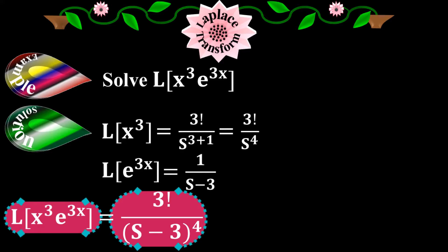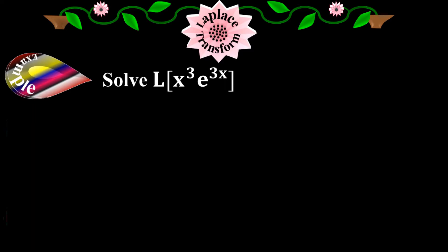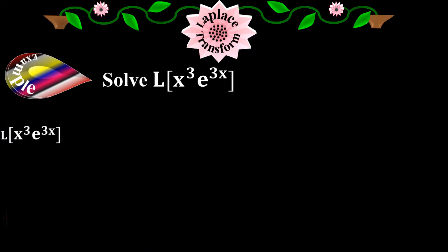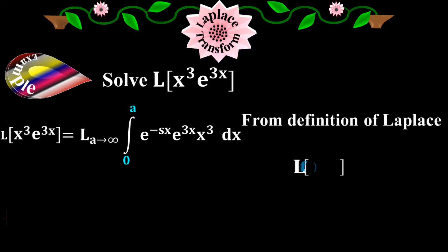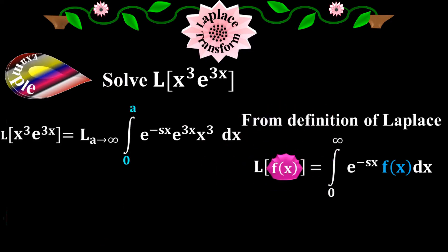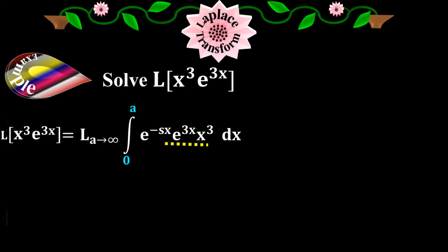Now I'm going to prove that the left side equals the right side. The Laplace of x to the 3 times e to the 3x equals the integral from 0 to infinity of e to the minus sx times e to the 3x times x to the 3 dx. I applied the basic Laplace transform formula: Laplace of f(x) equals the integral of e to the minus sx times f(x) dx, where the upper limit approaches infinity, and f(x) is x to the 3 times e to the 3x. Since we have a product of two functions, we use integration by parts.